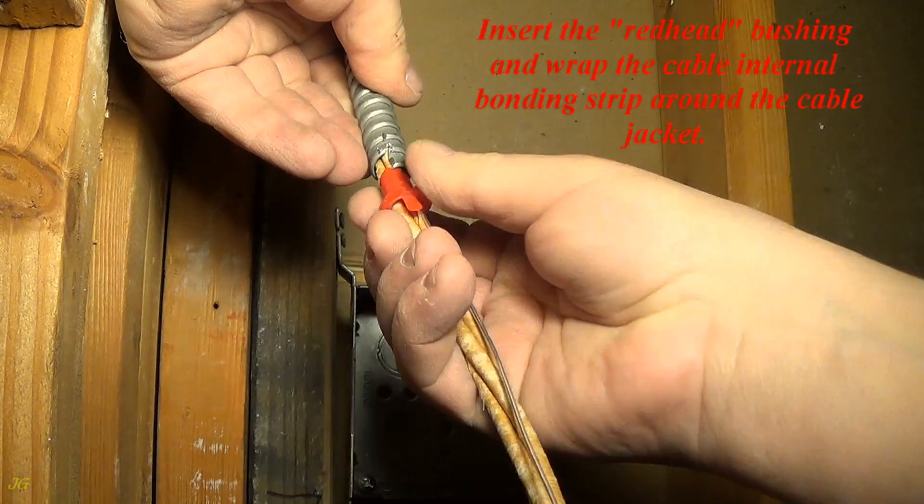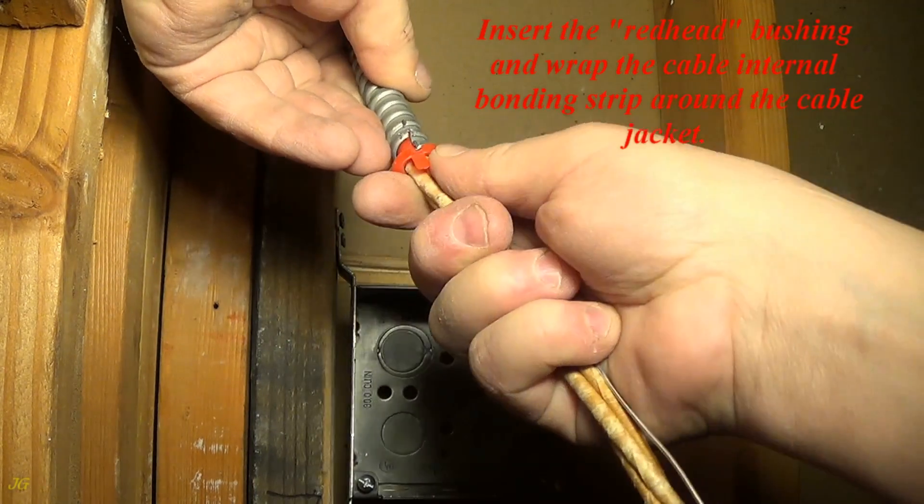Insert the redhead bushing and wrap the cable internal bonding strip around the cable jacket.